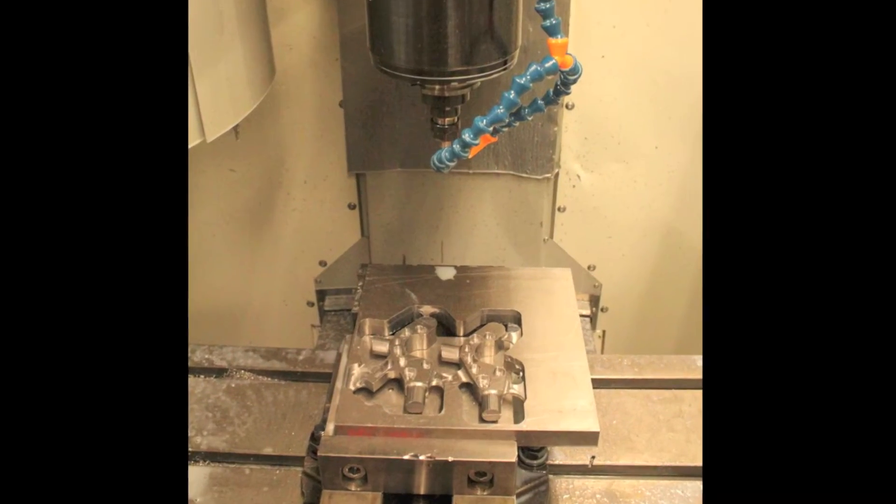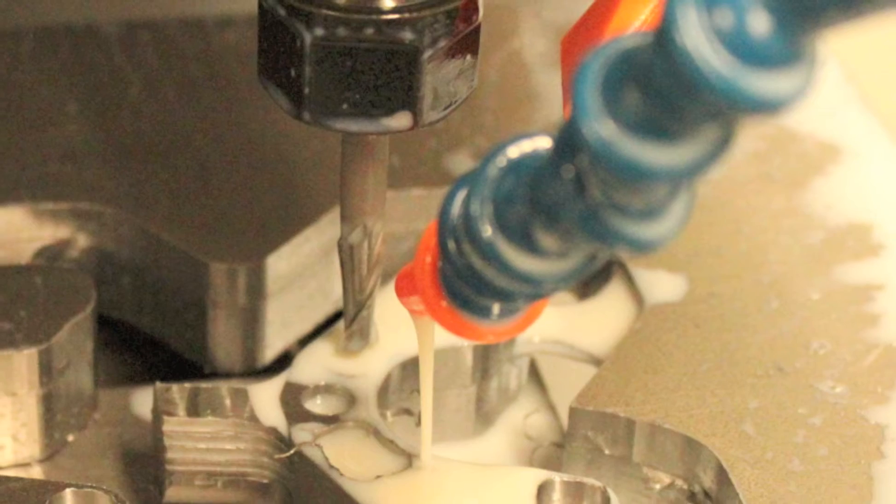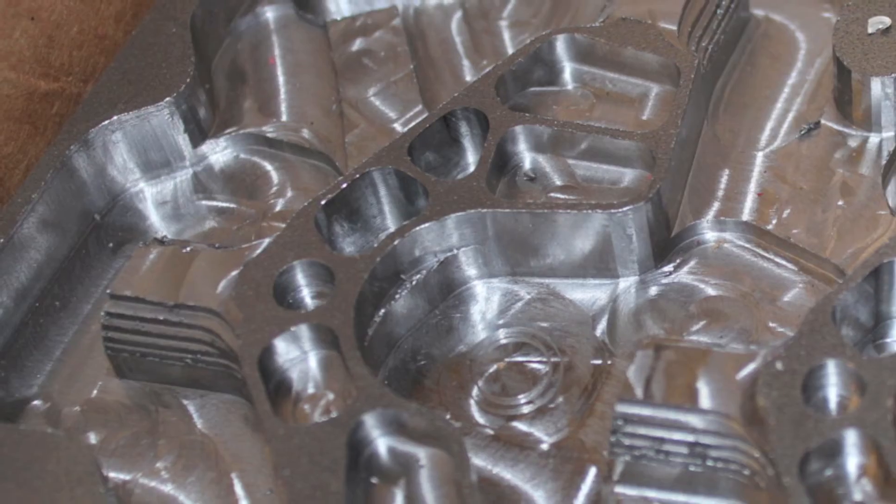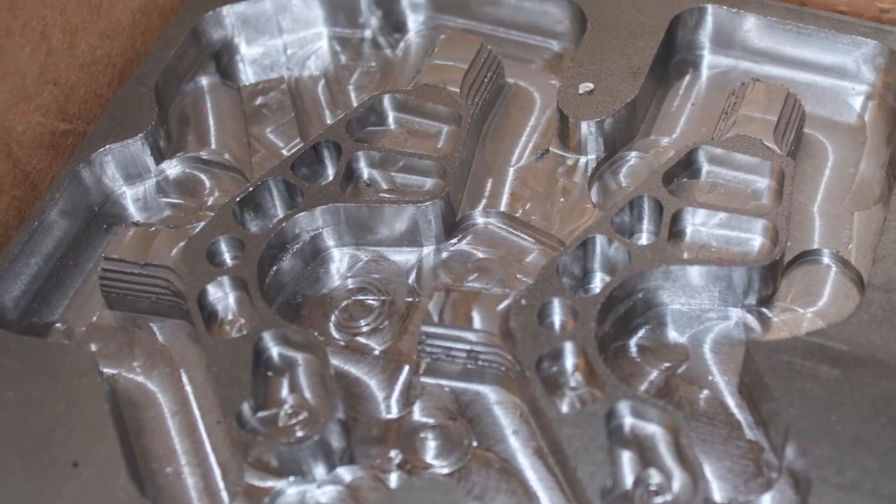This project was done on a Haas mini mill machine with about 10 different tools. There were very small pockets which originally were designed for a 1/8 inch end mill, but we went with a 1/4 inch end mill.